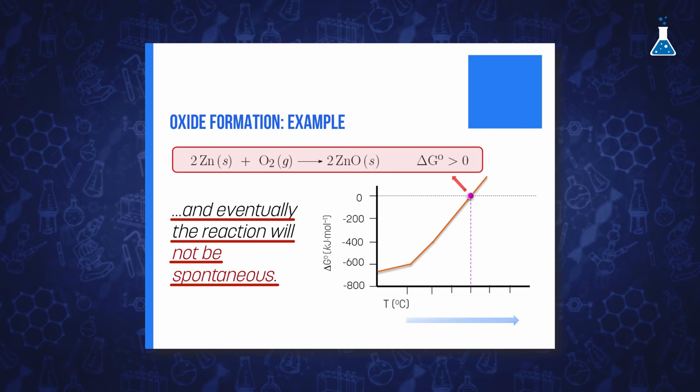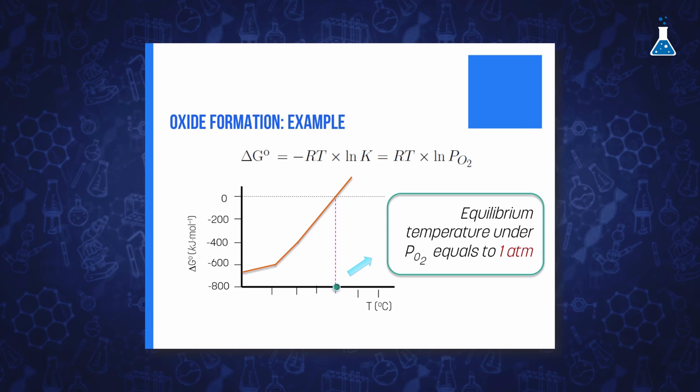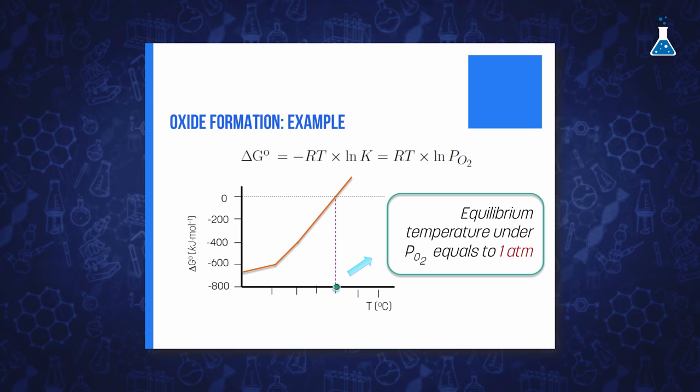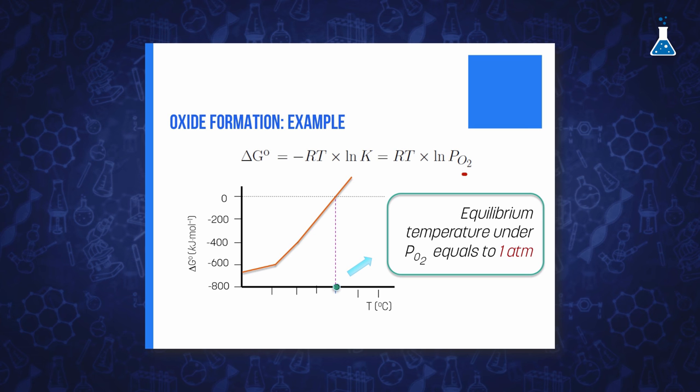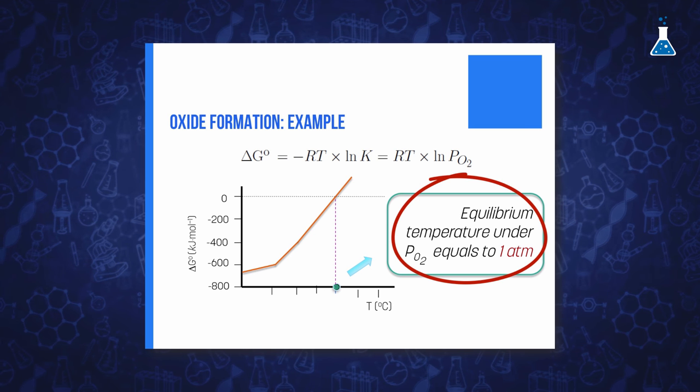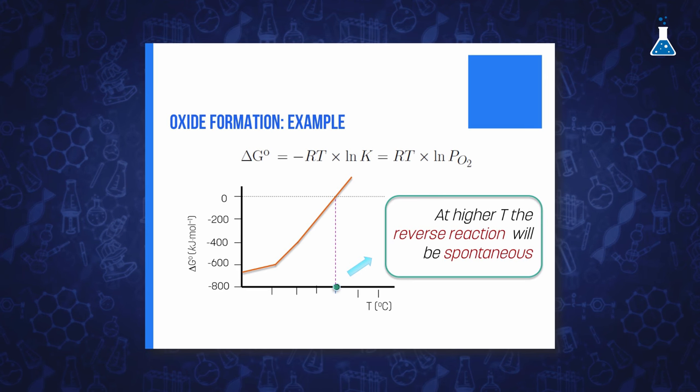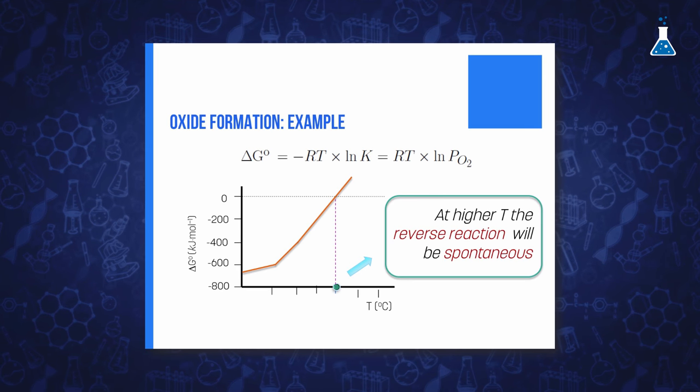The temperature at which the line intercepts with the horizontal line of variation of Gibbs energy equals zero represents the equilibrium of the three species under one atmosphere partial pressure of oxygen. At higher temperatures the formation of the oxide won't be spontaneous anymore and it will be the reduction of the oxide to give the element the favored process.